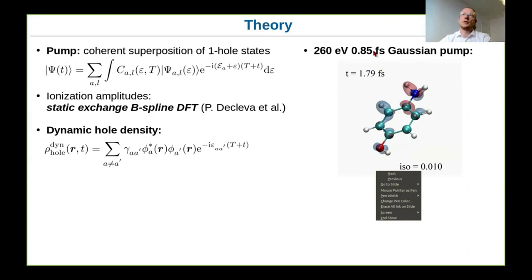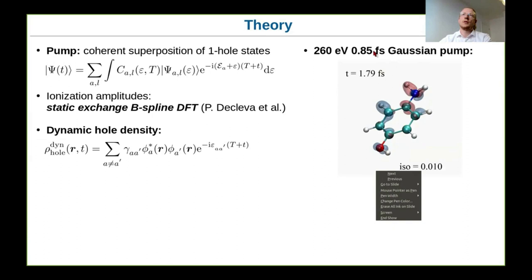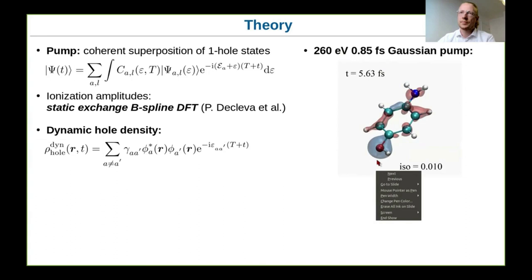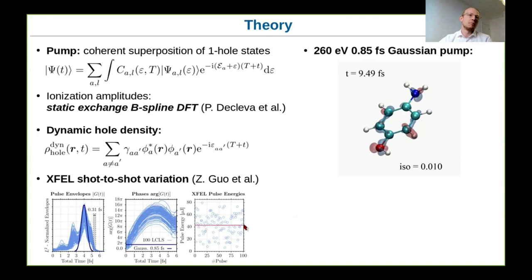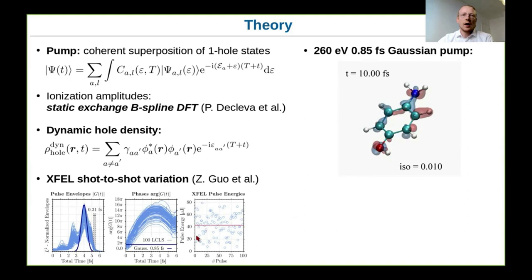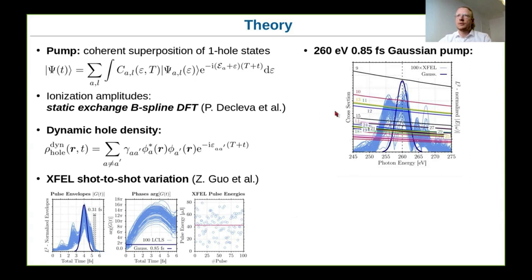When one assumes a simple Gaussian pulse with a width of 0.85 femtoseconds, the dynamic part of the hole density migrates on a sub-femtosecond to a few femtosecond timescale through the aminophenol molecule. However, this does not yet include the true X-ray pulses. In the next step, we included a sample of 100 X-ray pulses, shown in light blue, which differ quite a lot from the Gaussian pulse shown in dark blue.